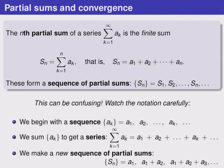This terminology can be confusing, so we're going to go through it again in slow motion. We start with a sequence called a_k, and then we sum the terms in a_k to get a series. Then we make a new sequence, called the sequence of partial sums, and listed by a different name, s_n. This consists of the first term in the series, then the sum of the first two terms in the series, the sum of the first three terms in the series, and so on.